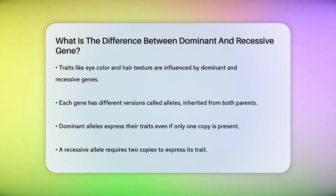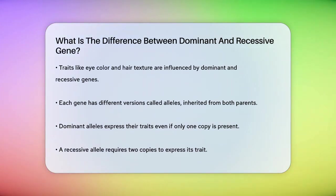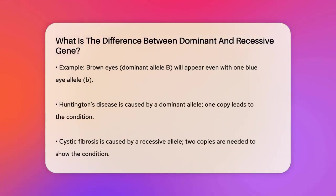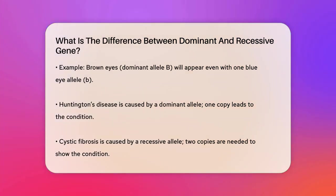A dominant allele is like the loudspeaker in a room — it's the one that gets heard no matter what. If you have one copy of the dominant allele, you'll show the trait associated with it. For example, if the dominant allele is for brown eyes, let's call it B, and you have one B and one b — the recessive allele for blue eyes — your eyes will still be brown because the B allele overrules the b allele.